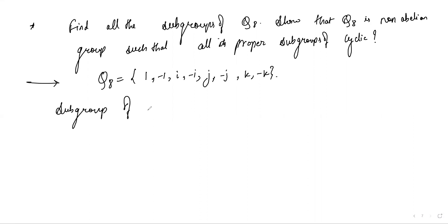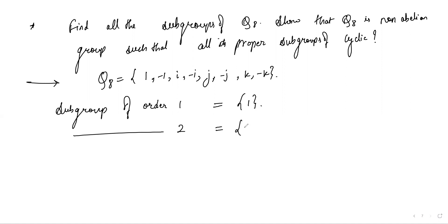There is a unique subgroup of order 1, which is the trivial subgroup. Now let's find subgroups of order 2. The subgroup generated by -1 is a group of order 2, and groups of order 2 are cyclic.